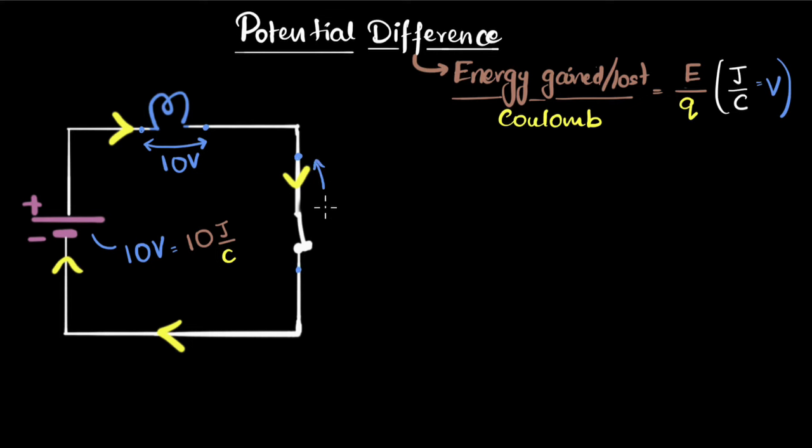There is no potential difference between these two points. So between these two points, we have zero volt potential difference. And same is the case between these two points. There is zero volt potential difference because there is no energy gained or lost by the charge.